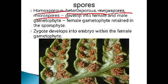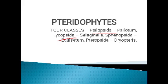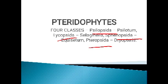Pteridophytes are further classified into four classes: Psilopsida (example: Psilotum), Lycopsida (example: Selaginella), Sphenopsida (example: Equisetum), and Pteropsida (examples: Dryopteris, Pteris, and Adiantum).